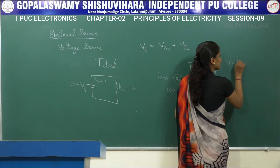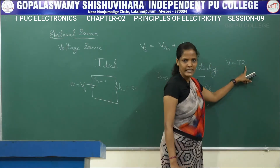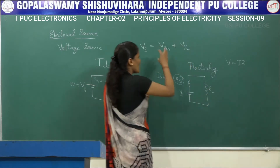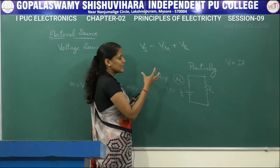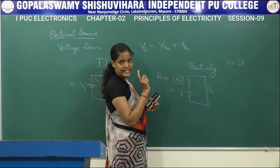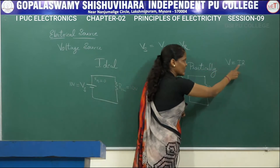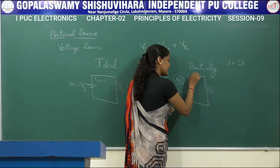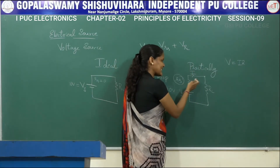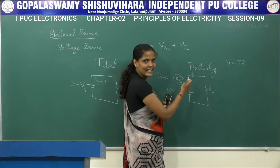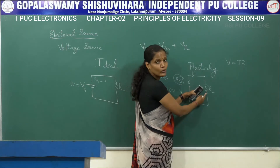We know from Ohm's Law that V equals I into R, where V is voltage, I is current, and R is resistance. The voltage drop across the internal resistor VRS equals I into Rs. The current flowing is I, and since Rs and RL are connected in series, the same current I flows through both Rs and RL.